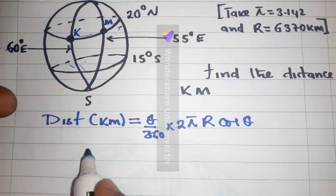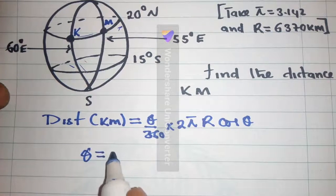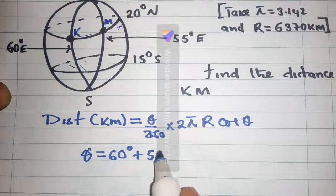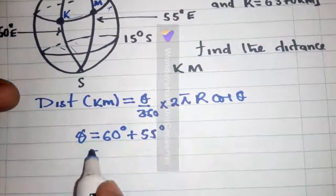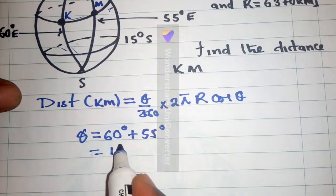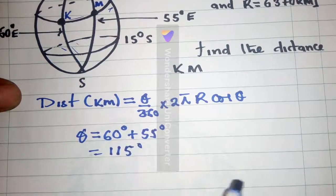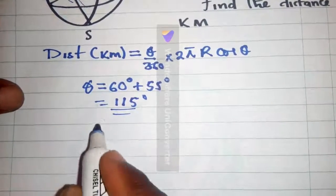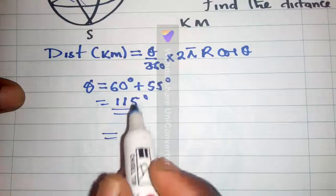So, you say theta, want to find the theta? Theta is equal to 60 degrees plus 55 degrees, which is equal to 115 degrees. So, this is our theta, and we get this very theta, put it here.